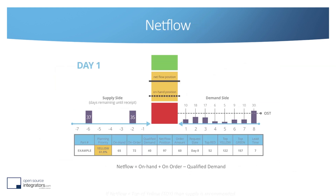Let's now talk about the net flow equation. The net flow is the quantity you have on hand in your warehouse, plus the quantity on order arriving within the lead time, minus the qualified demand within the lead time. On the schema on the left, you have 37 plus 35 on order, which gives you 72. We have 65 on hand, shown by the dotted line. On the right, you have the demand. Qualified demand is basically what you have to ship today: on day one you have 10 to ship, plus the quantity that goes over the spikes horizon. On day eight, there is demand for 30 items that's way over the threshold, so our qualified demand is 10 plus 30, which gives a net flow position of 97.